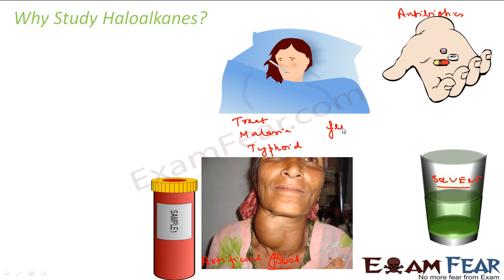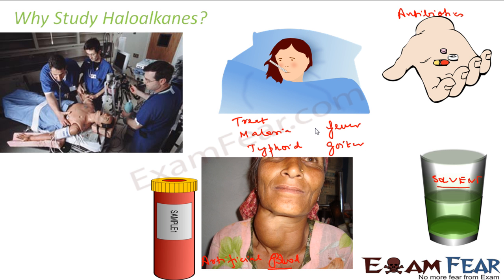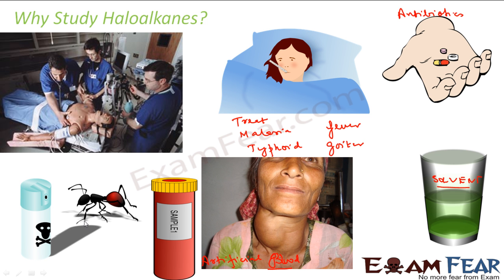Haloalkanes are used to treat diseases such as malaria, typhoid, fever, and goiter. They are also used for anesthesia during operations — patients must be in an inactive state, and without anesthesia major operations cannot be performed. They are also used for creating insecticides. So haloalkanes have huge applications, from antibiotics and solvents to treating diseases, anesthesia, and creating artificial blood.